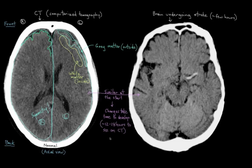Even though you might not be able to see any brain tissue changes right after a stroke on a CT scan, you might be able to see a clot that caused it. Here's a CT scan taken pretty quickly after a stroke, like within a few hours. What you might notice is this thing here, which is actually the left middle cerebral artery — it certainly stands out.